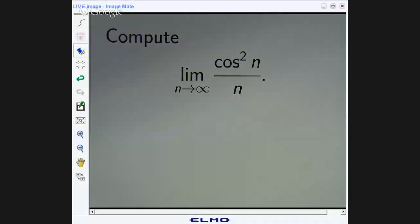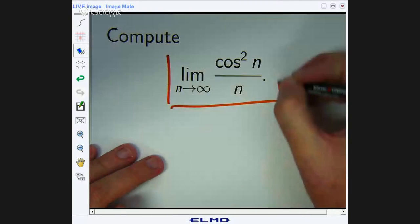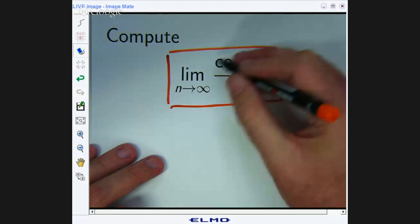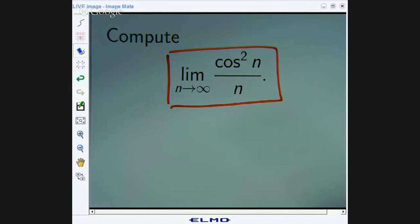Alright, here we're asked to compute the limit as n approaches infinity of this sequence here, that is cosine squared of n all over n. So what do we do? It's not obvious what's happening. Intuitively, what we might think is that the n on the bottom grows faster than the cosine squared. Maybe there's a bit of a battle going on and the n wins and drags the limit down to zero. Well, let's discuss this a little bit further.